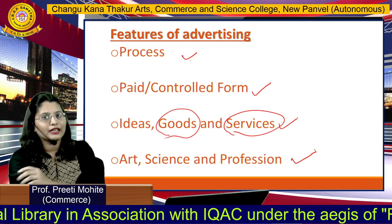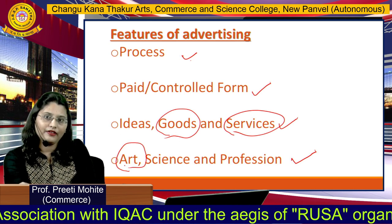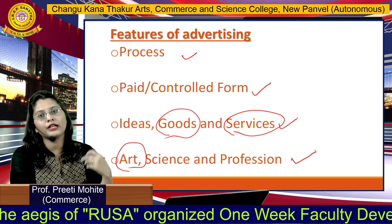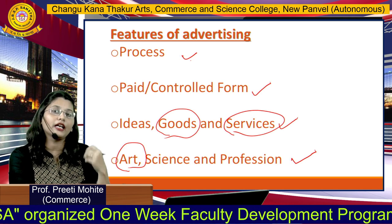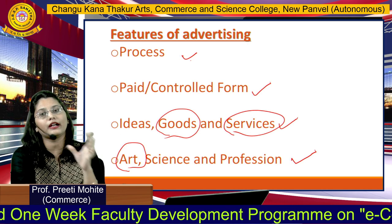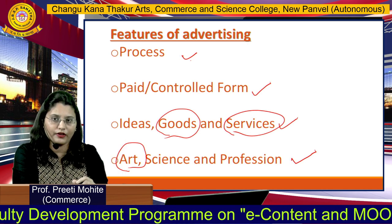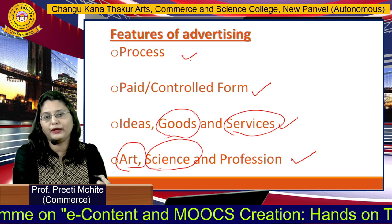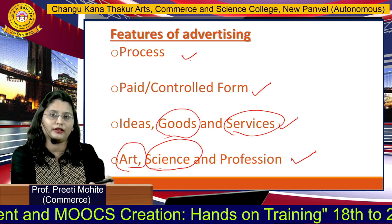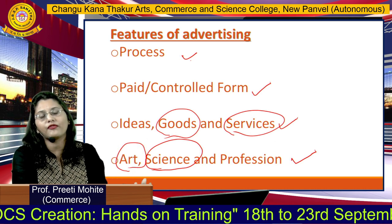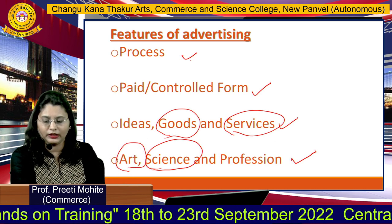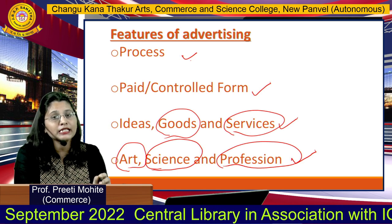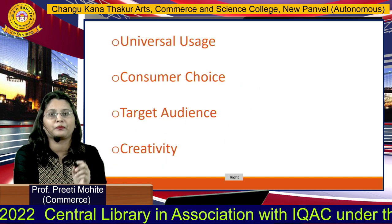Next is art, science and profession. Advertising is art because creative people are required, and any advertisement should be created in a creative manner — more creative advertising creates a greater impact in the mind of the customer. It is science because advertising must be prepared in a systematic manner and should be scientifically proven. And it is a profession because nowadays professional firms and professional advertising agencies are doing all these activities.